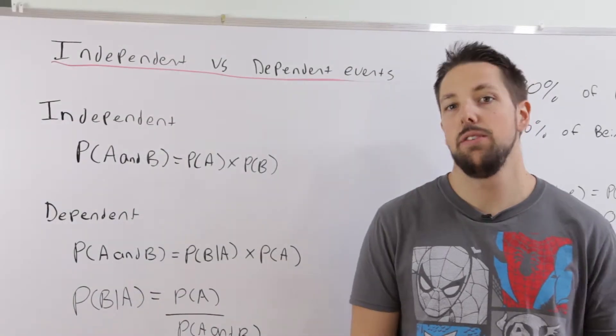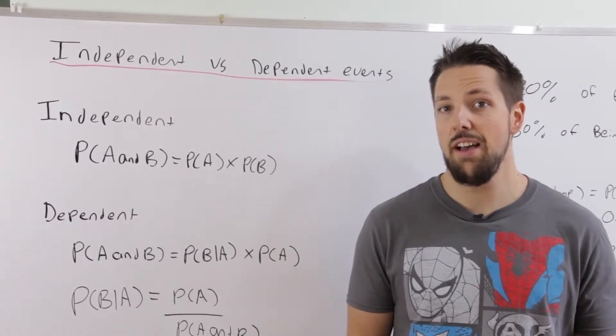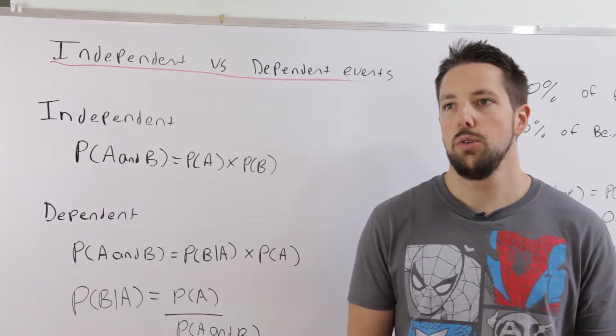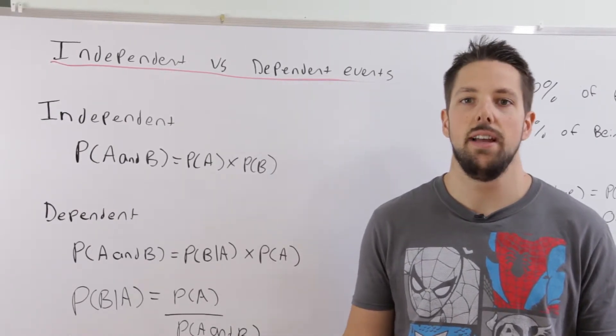We're going to talk about compound events. Compound events are probability events that have two different stages. There's two types of compound events: independent events and dependent events.